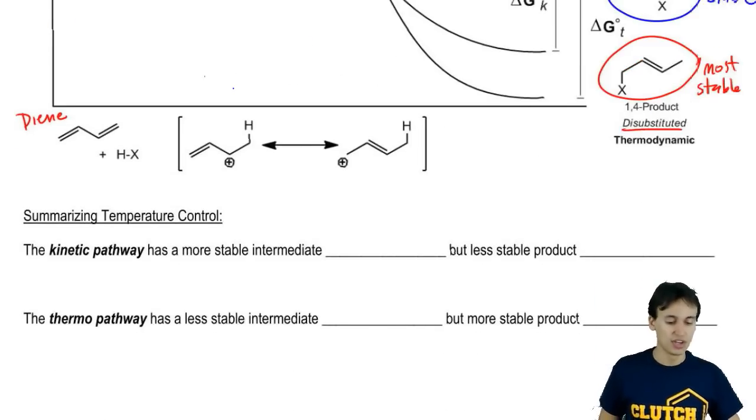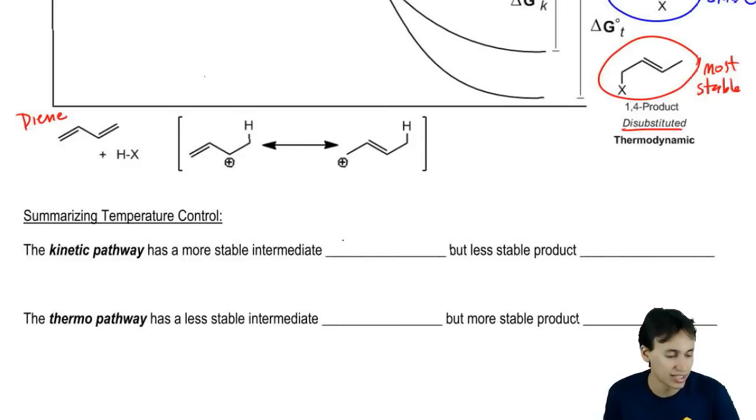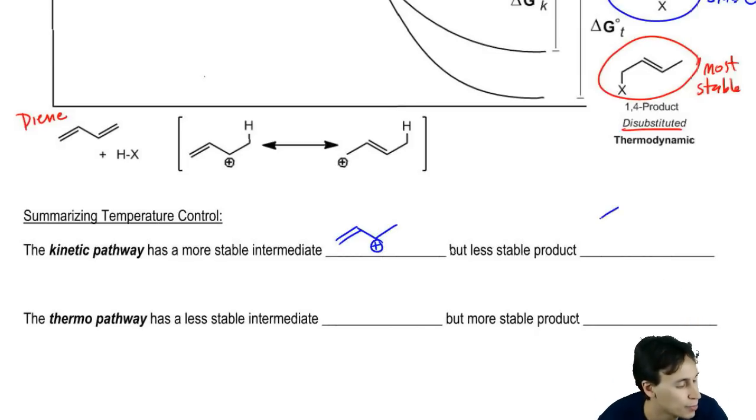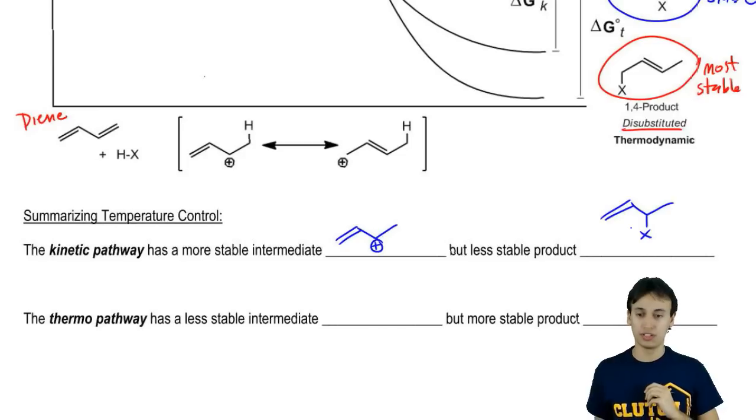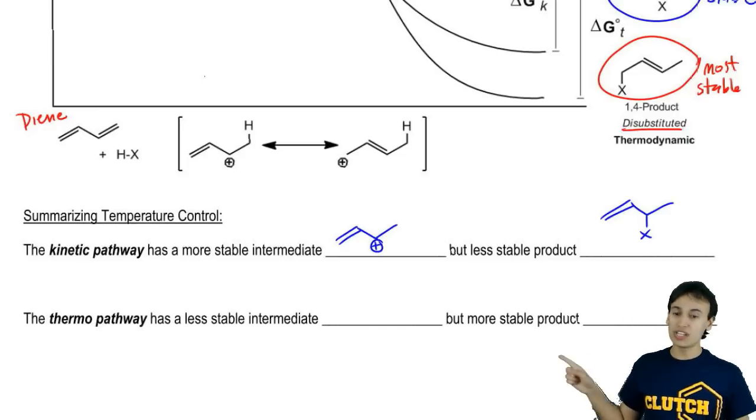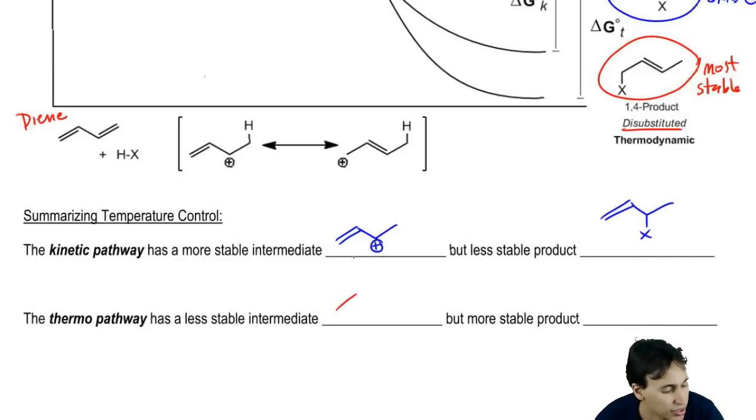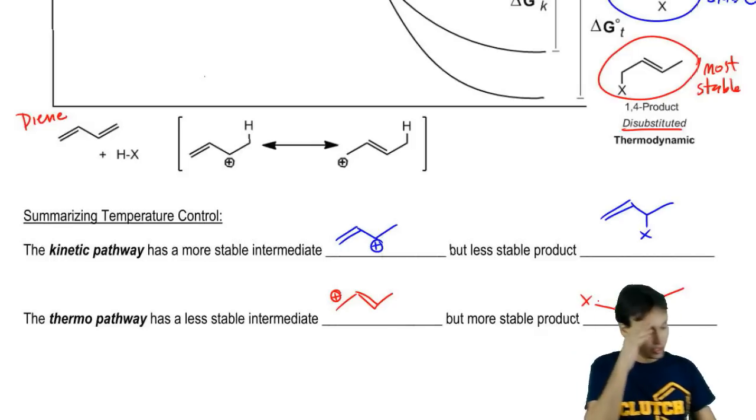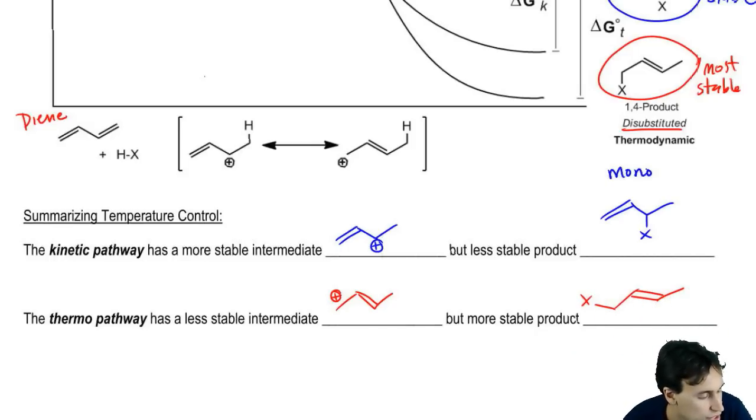If we were to summarize this, what we could say is that the kinetic pathway has the more stable intermediate. Let's actually just write that in. It has the more stable intermediate, the secondary, but it has the less stable product, the mono-substituted. Whereas the thermodynamic pathway has the less stable intermediate, primary, but the most stable product would be di-substituted.